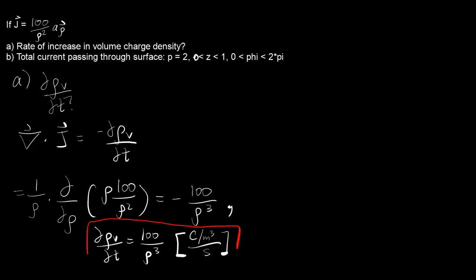And so the second part, part b, you can find current by using a surface integral of the current density J dotted with ds, or the surface that the current is passing through.